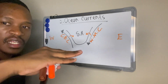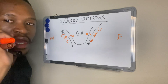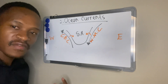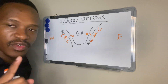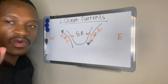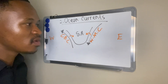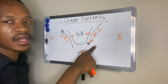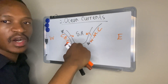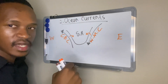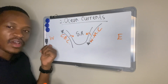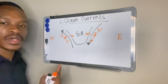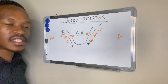If the ocean current comes from the equator it is going to be warm, but if the ocean current originates from the poles it is going to be a cold ocean current. On the east we have our warm ocean current which originates at the equator. On the west we have our cold ocean current which originates at the poles.